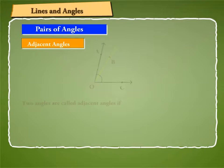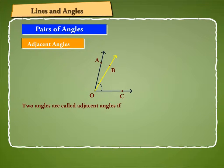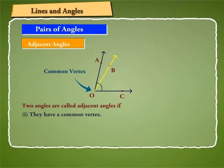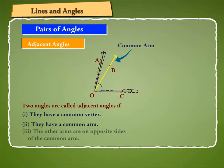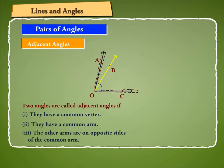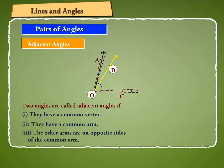Adjacent angles: two angles are called adjacent angles if they have a common vertex and a common arm. In the on-screen figure, angle AOB and angle BOC are adjacent angles as they have a common vertex O and a common arm OB between the other two arms.